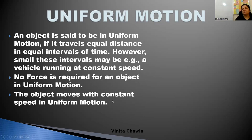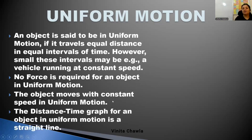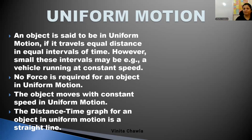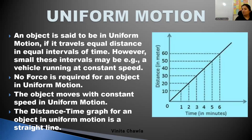The object moves with constant speed in uniform motion. If you plot the distance-time graph for an object moving in uniform motion, then it is a straight line — inclined like this. Here we take time on one axis and distance on the other. It is inclined like this for uniform motion.